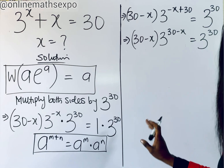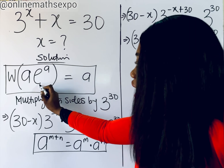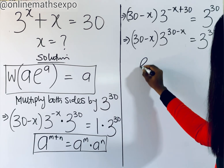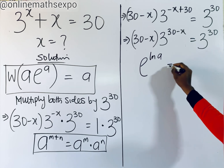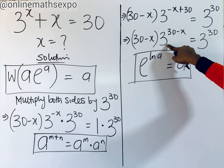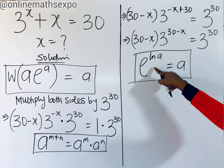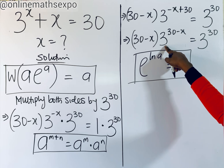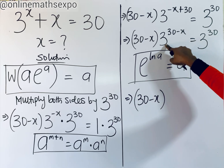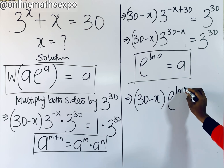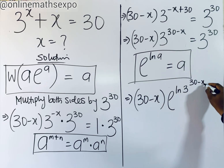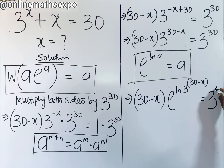At this point, we observe there is e in the Lambert form, but what we have here is base 3. Remember that e to the power of ln of a is always equal to a. So we rewrite this 3 as e to the power of ln of 3 — that will give us back 3, and you have not changed anything. So we have 30 minus x multiplied by e to the power of ln of 3, raised to the power of 30 minus x, equal to 3 to the power of 30.